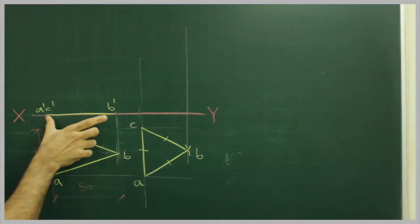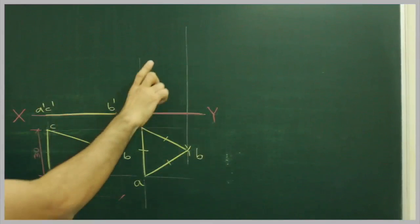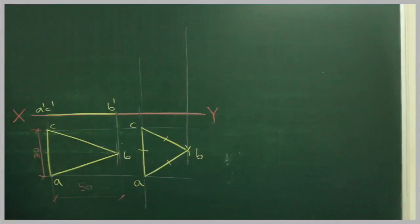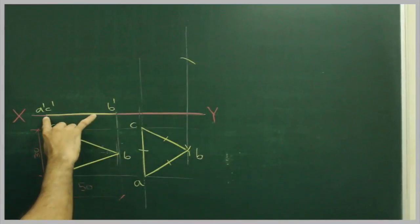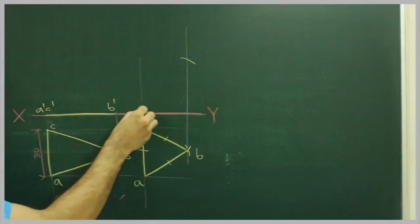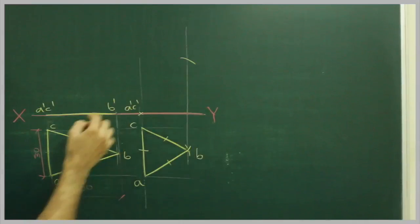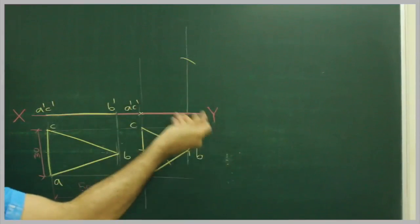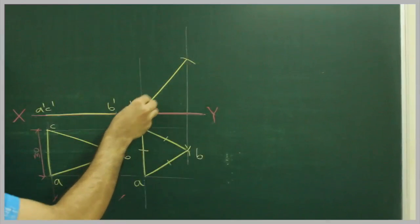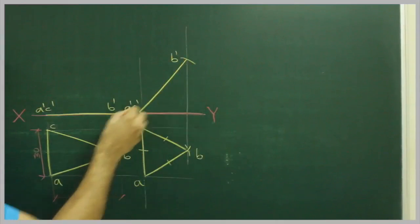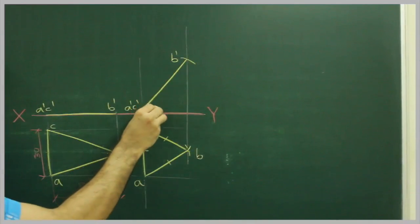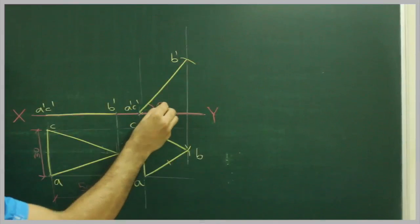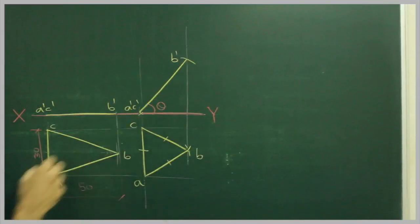Now we will take this side, A dash, C dash to B dash, and we will cut from here. We will take this to this, we will mark this point, A dash to C dash. Take this distance, and from here you cut it on this side. So this is theta. So we got the required inclination.